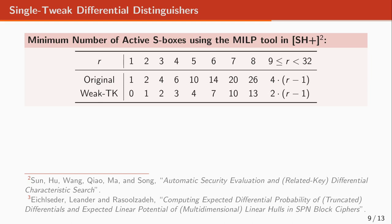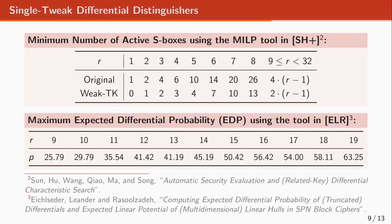For this we use the MILP tool introduced by Sun et al. at ASIACRYPT 2014 to find all the differential patterns with the minimum number of active S-boxes. Here are the results: the numbers in the first row are for the original CRAFT and the numbers in the second row are for the weak tweak key structure of the cipher. As you can see, in almost all rounds the number of active S-boxes for the weak tweak key structure is half of the ones for the original cipher.